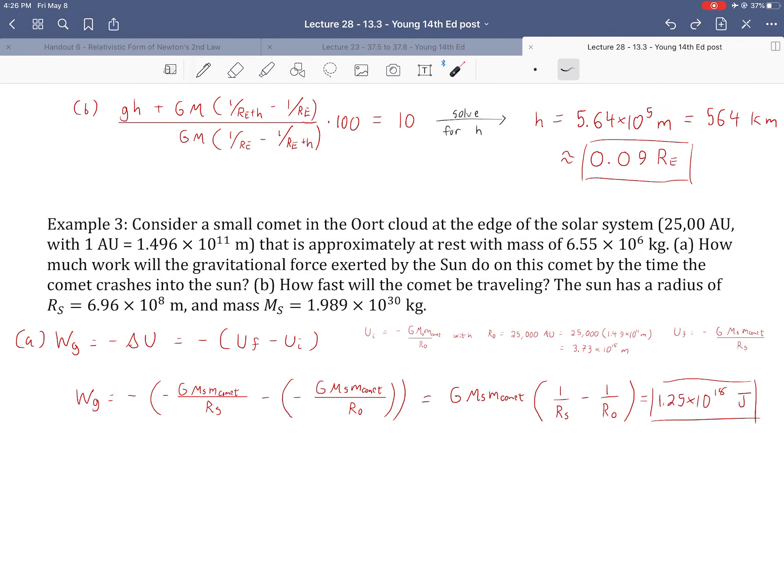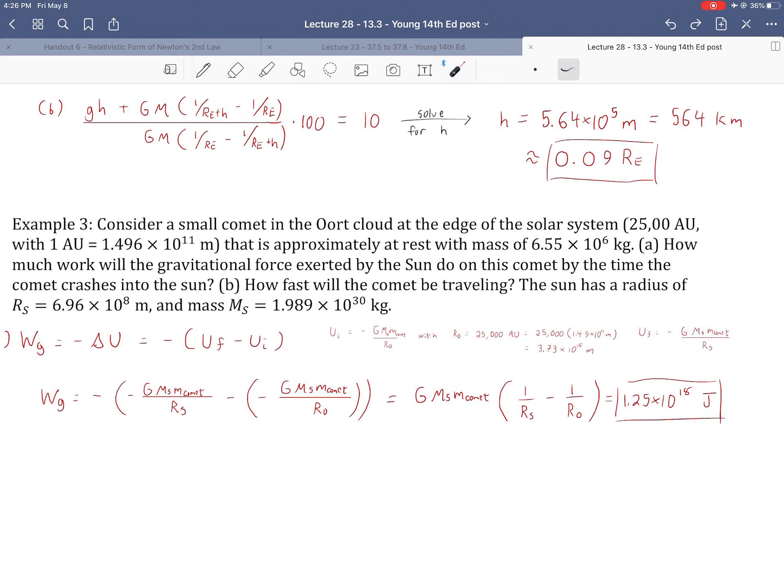Work done by gravity is going to be the negative of the two. So I'm going to clean that up a little bit. And then if I switch out the negatives, look what comes. U final minus U initial simplifies to 1 over R_s minus 1 over R_0. Well here's the interesting thing. So 1 over R_s is dividing by a much smaller number. R_s is much smaller in magnitude than R_0. And so then this is going to be a bigger number than this one, which gives us a positive.